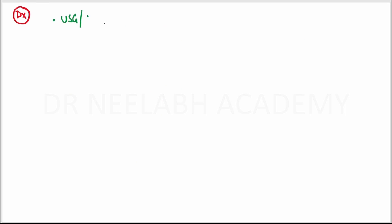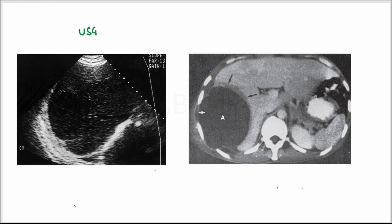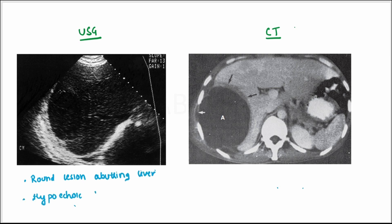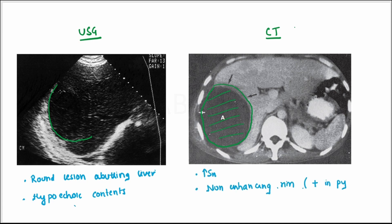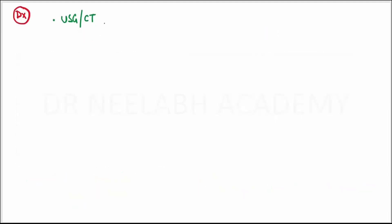Now, differential diagnosis. It may be diagnosed by USG or CT. This is the USG film and this is the CT film. On USG it is characterized by a round lesion abutting the liver surface, with hypoechoic contents. On CT, which has high sensitivity, a non-enhancing rim is seen, whereas the rim is enhancing in pyogenic abscess. Laboratory investigations: the most common finding is increased PT INR.